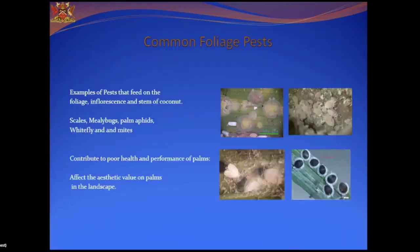Common foliage pests that are sap feeders are placed under the order Hemiptera. These include scales, mealybugs, palm aphids, whiteflies, and mites — though mites belong to a different class. Because of their mouthparts they suck sap from the plant and therefore are sap feeders. These pests contribute to poor health and performance of palms and affect the aesthetic value of palms in the landscape.